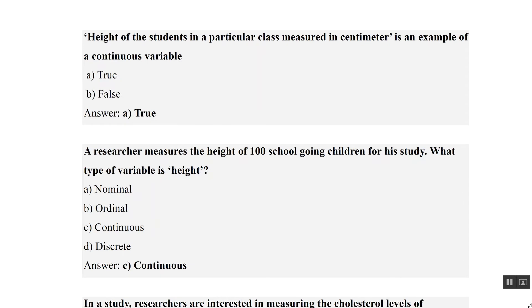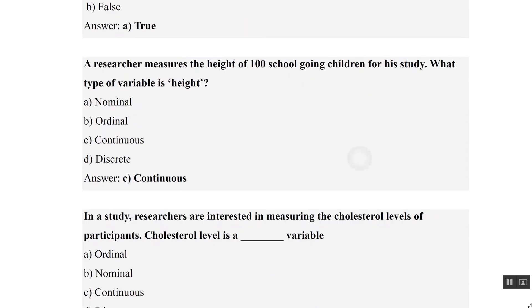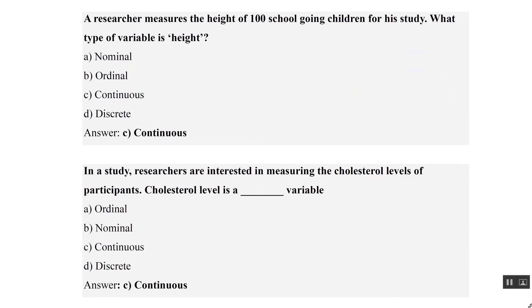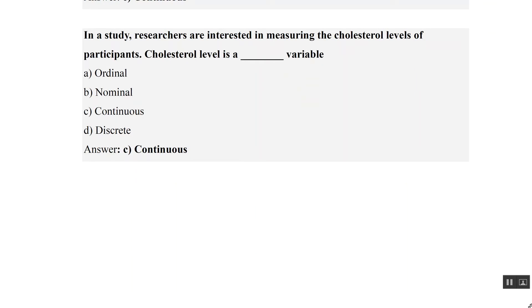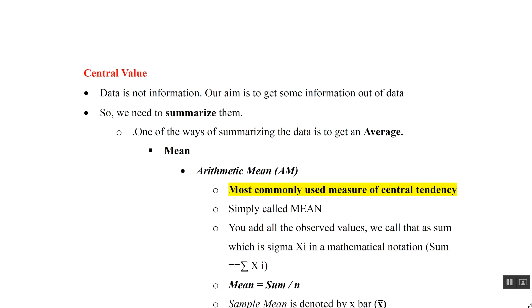Height is a continuous variable — true, it is continuous data. A researcher has height of 100 children — it is continuous data. Cholesterol is a continuous variable because we can have decimal values. Now there are two values: one is central value and the other is dispersion. Let us look at central values.